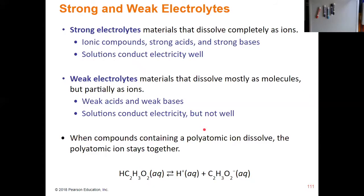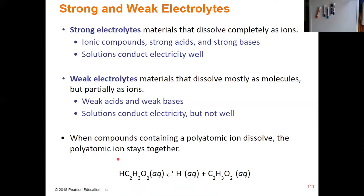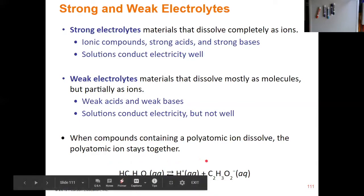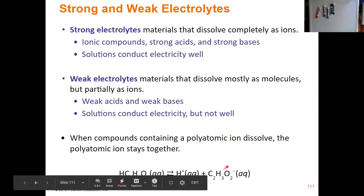Another thing to keep in mind is that whenever you have a compound that has a polyatomic ion in it, that will dissolve in solution, but the polyatomic ion is going to stay together. Over here we see acetic acid, which is a weak acid. When you have the partial ionization happen, you have the hydrogen ion separate, and then you're left with the acetate ion. Notice that the acetate ion doesn't separate out — the pieces of it don't separate from one another. That's a very important thing to keep in mind.